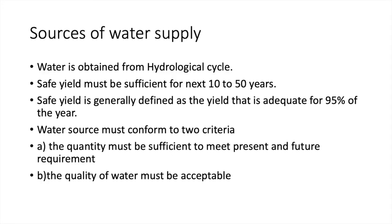From where do we get water? The sources of water — water is obtained from the hydrological cycle, and the safe yield of the source must be sufficient to serve the population expected at the end of the design period, around 10 to 50 years in the future. The safe yield is generally defined as the yield that is adequate for 95 percent of the year. In general, water sources must confirm two criteria: the quantity must be sufficient to meet present and future requirements, and the quality must be acceptable as per the standards.